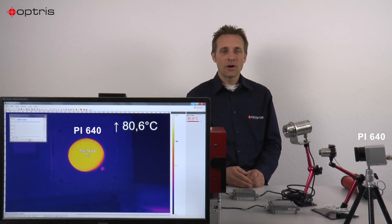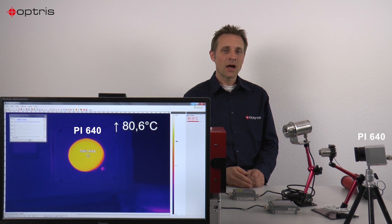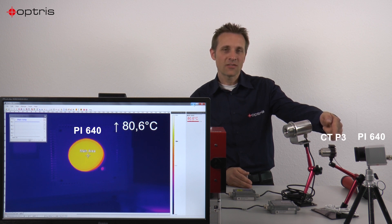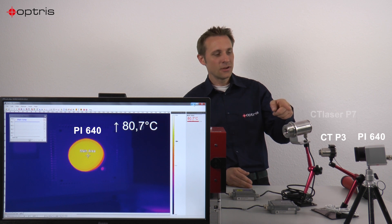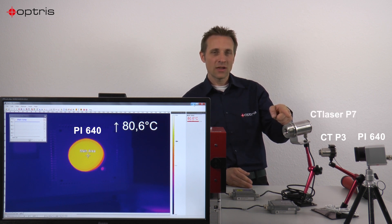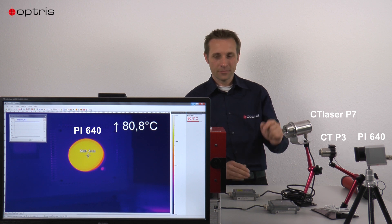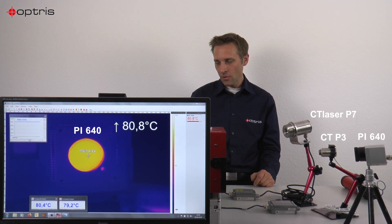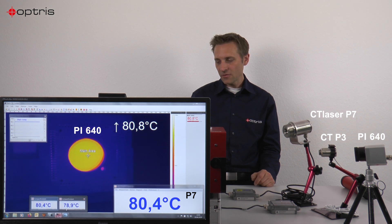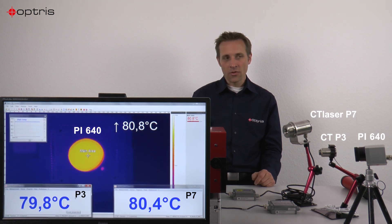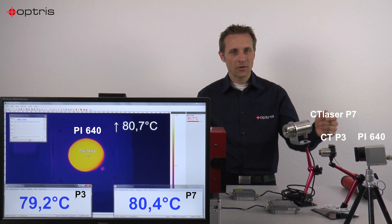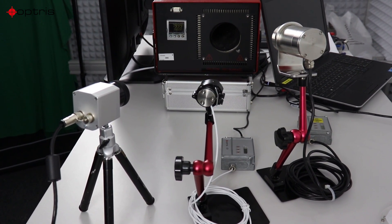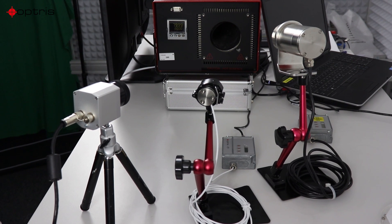Let's have a look at our PixConnect software and our other types of sensors. We have here a P3 sensor which has a wavelength of 3.43 microns, and we have the CT Laser P7 sensor which has a wavelength of 7.9 microns. I can show the temperature of these sensors on our screen — this is the temperature of the P7 sensor, and on the left side we have the temperature of the P3 sensor.